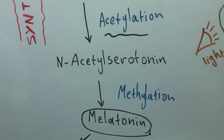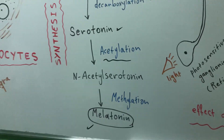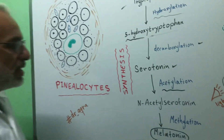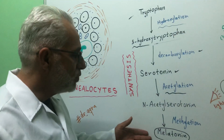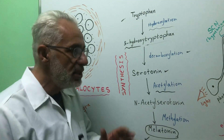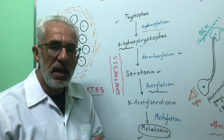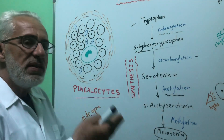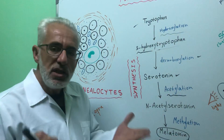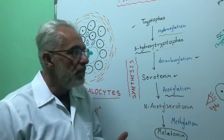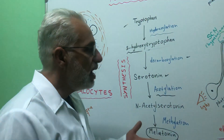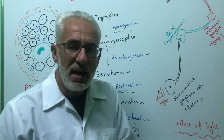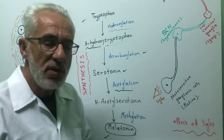Now, how is melatonin released? Melatonin is actually released only in darkness, because darkness stimulates the release of melatonin, but light will inhibit the release of melatonin.